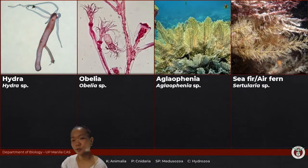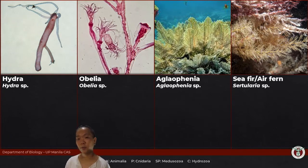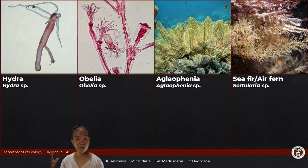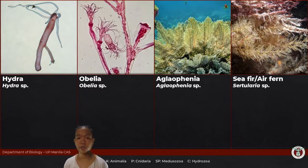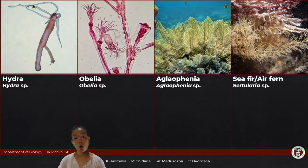Class Hydrozoa: their gastrodermis does not have nematocysts. In the polyp form, different polyps have different appearances and functions — they are specialized. You have feeding polyps and reproductive polyps, referred to as gastrozoids, gonozoids, and dactylozoids. They work together in a colony and are very much interdependent — they can't live without each other.